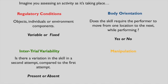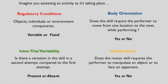The fourth term is manipulation. With manipulation, we're asking ourselves: does the motor skill require the performer to manipulate an object, face an opponent, or work with a partner? If they have to work with some kind of object or tool, or if they're facing an opponent, or if they have a partner they have to work with, then we would say that yes, manipulation is required. Or we could, of course, say no, that no manipulation is required.